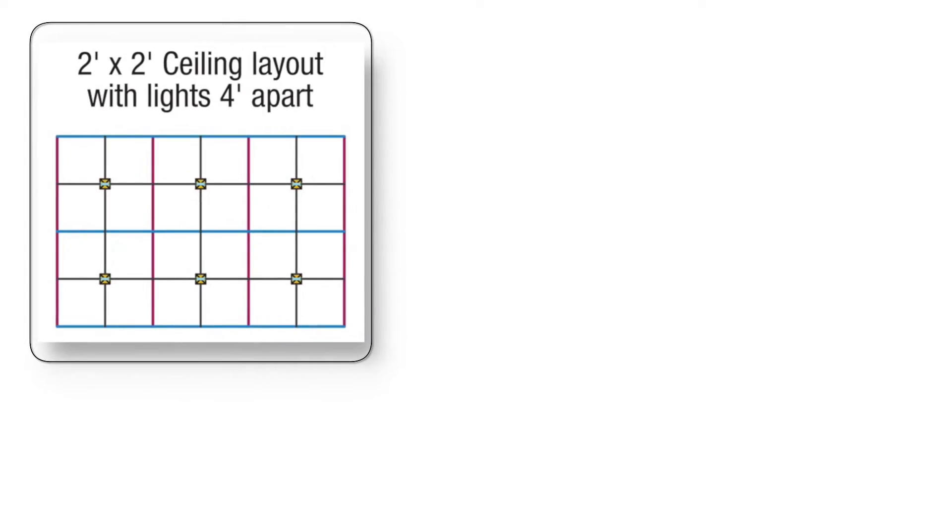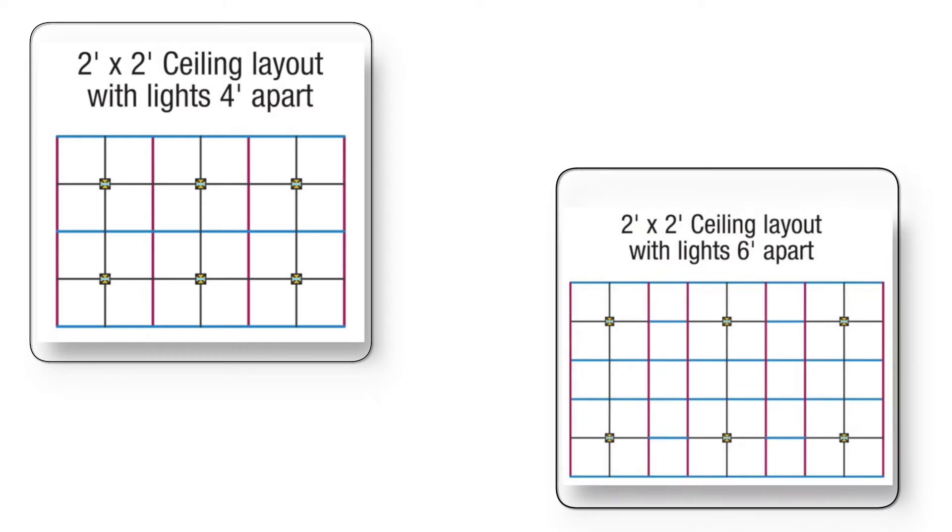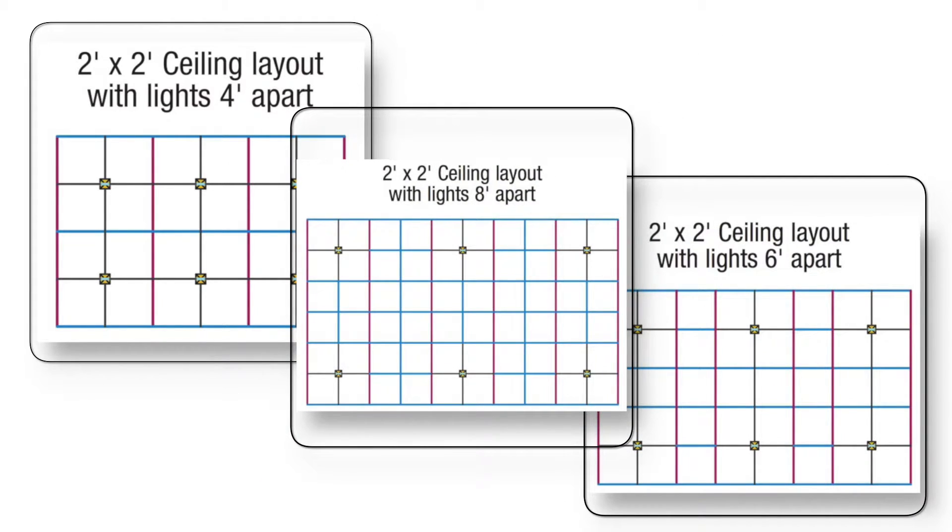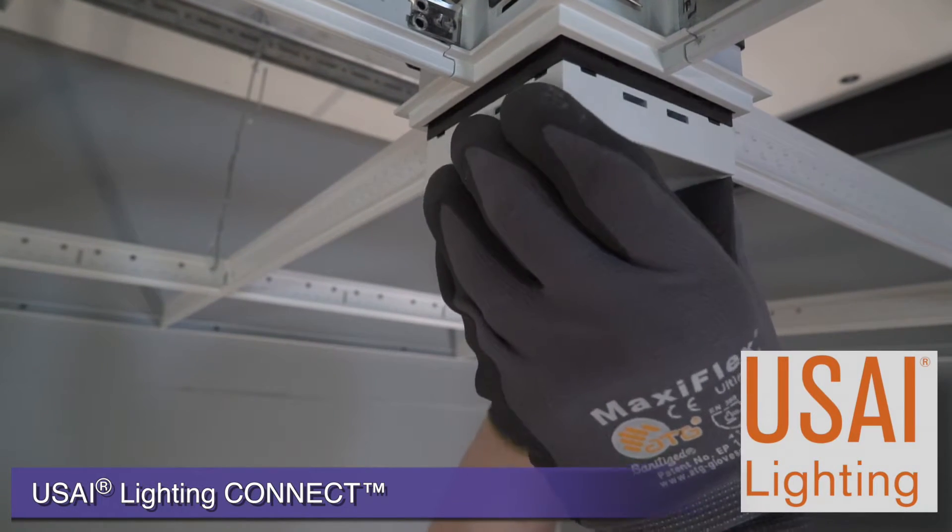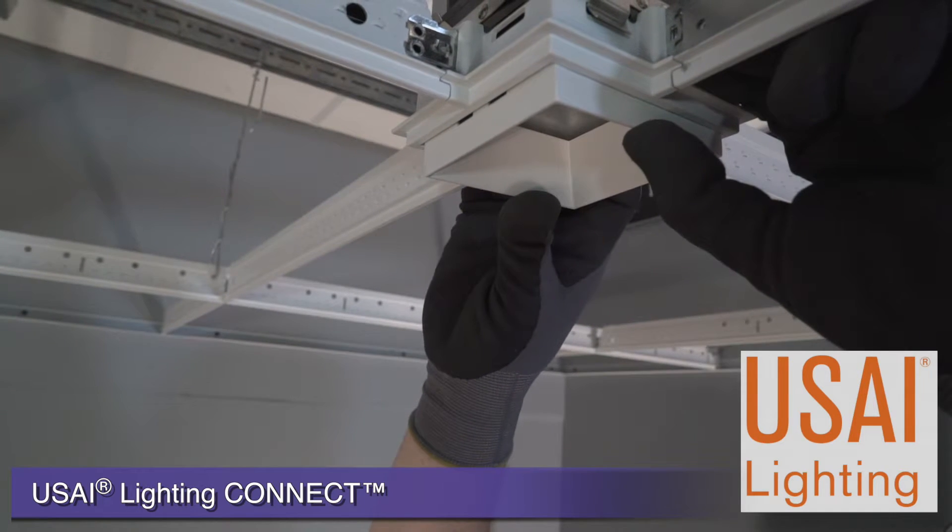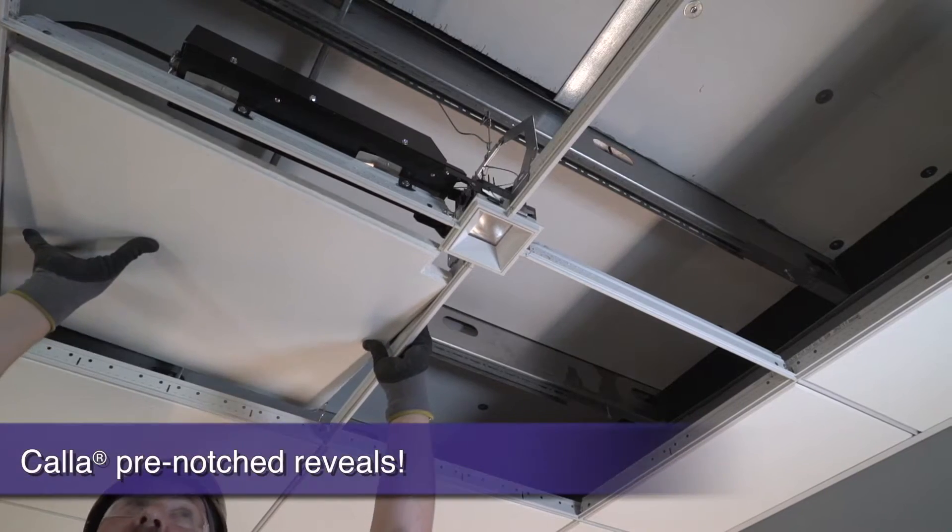Your lighting layouts can be 2 feet, 6 feet, or 8 feet on center with easy RCP layout guides for incorporating into your plans. Armstrong has partnered with USAI Lighting and their Connect family of lights, which simply snap into the intersection mounting frames.